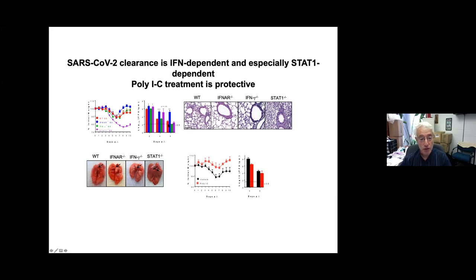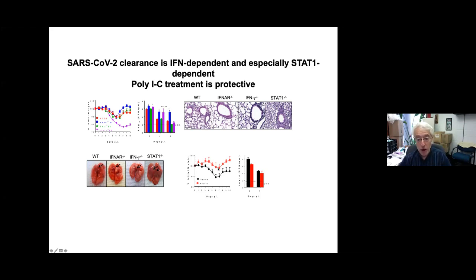Looking at virus titers, the STAT1 knockout and interferon knockout show delayed clearance. There is a much greater cellular infiltrate in the STAT1 knockout mice histologically. Testing poly-IC as an intervention, mice treated with poly-IC don't lose weight appreciably and virus is cleared more quickly at day two — though clearance at day five was not as rapid as expected.